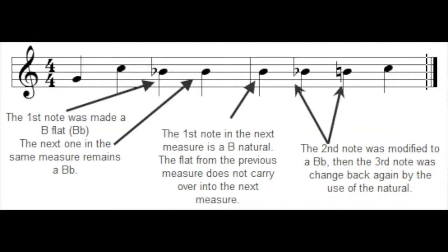Looking at this diagram, the first note with an accidental attached to it is a B flat. So it is assumed that the note after it on the same line is also a B flat and does not require another accidental. Because bar lines cancel any accidentals from the previous measure, the first note of the second measure goes back to a B natural. A natural sign cancels any previous accidental, returning a pitch to its natural level — so the note B flat returns back to B natural after the use of a natural sign.